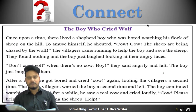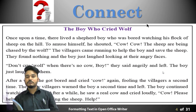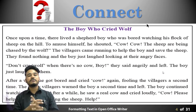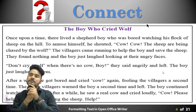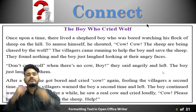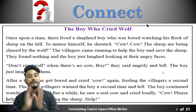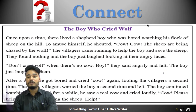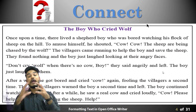The paragraph reads: once upon a time there lived a shepherd boy who was bored watching his flock of sheep on the hill. To amuse himself he shouted 'cow cow, the sheep are being chased by the wolf.' The sentence is incorrect — he should have said 'wolf wolf.' Later, 'he got bored and cried cow again, fooling the villagers a second time' and 'cow please help, the cow is chasing the sheep.' The word cow is used incorrectly and needs to be changed.